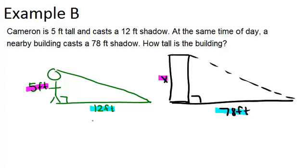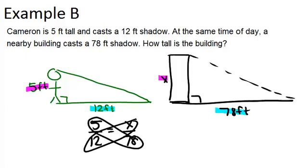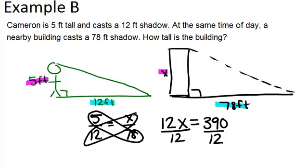I'm going to say 5 over 12 equals x over 78. And again, you can solve this by cross multiplying. Multiply the 5 times 78 and the 12 times x. And you get 12x equals 390. And then divide both sides by 12. And you get 32.5.